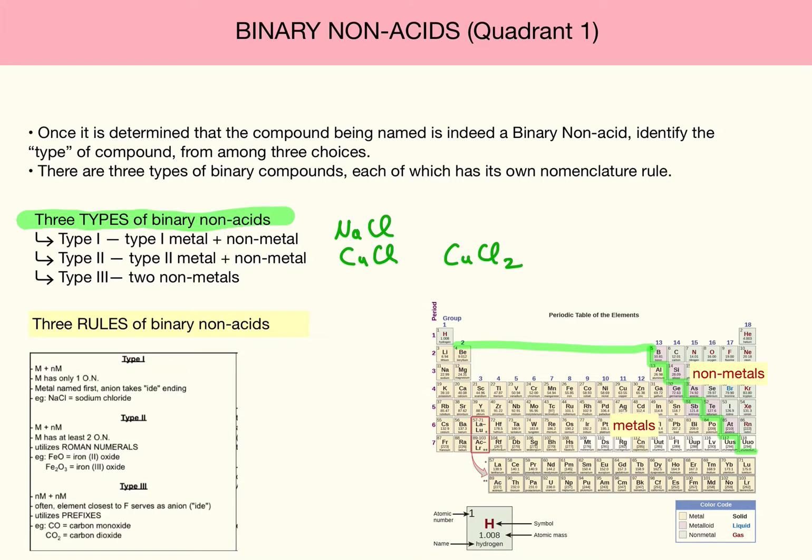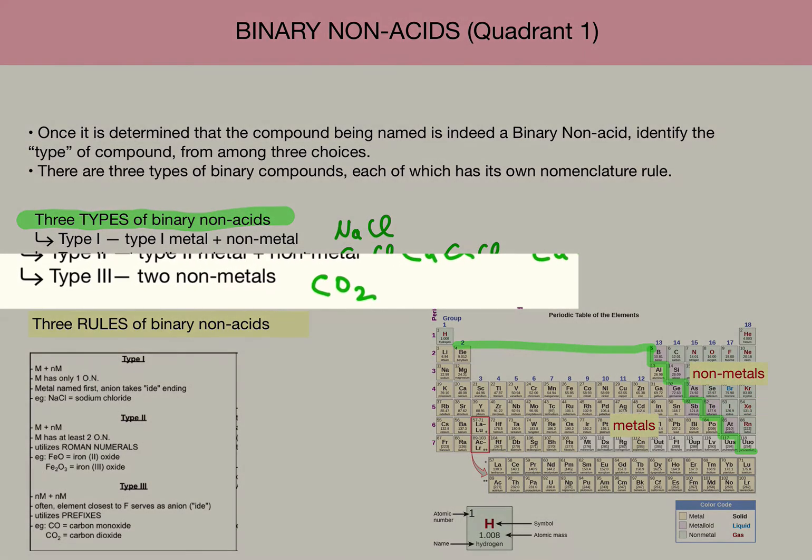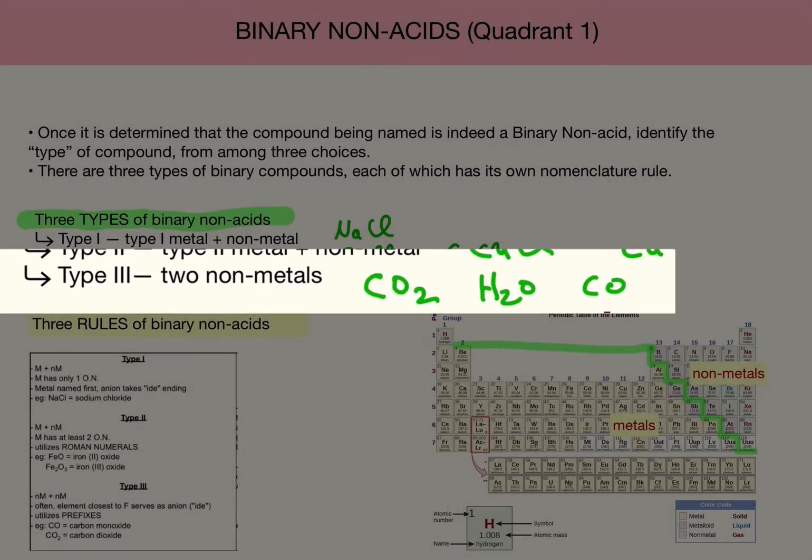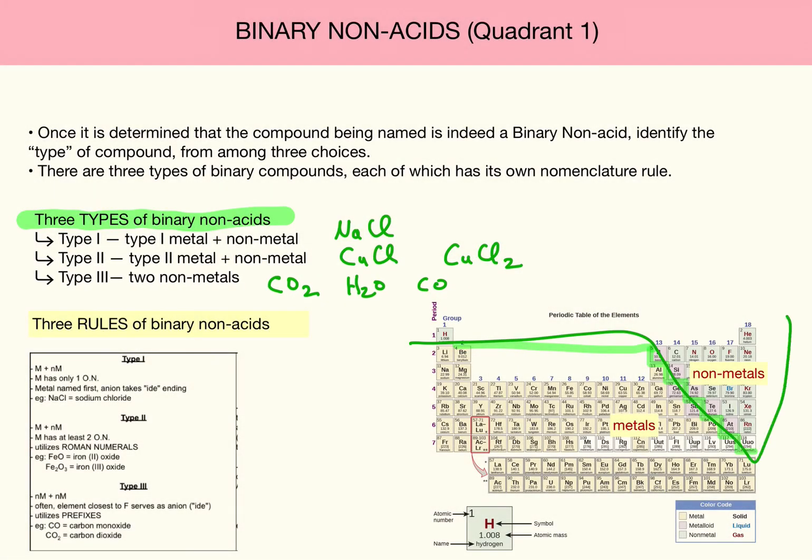Next we move to type 3, which is two non-metals. An example of this might be carbon dioxide. It has one non-metal and a second one, or water, or carbon monoxide, and the list goes on. Anytime you combine two non-metals, you have what's called a type 3 compound.